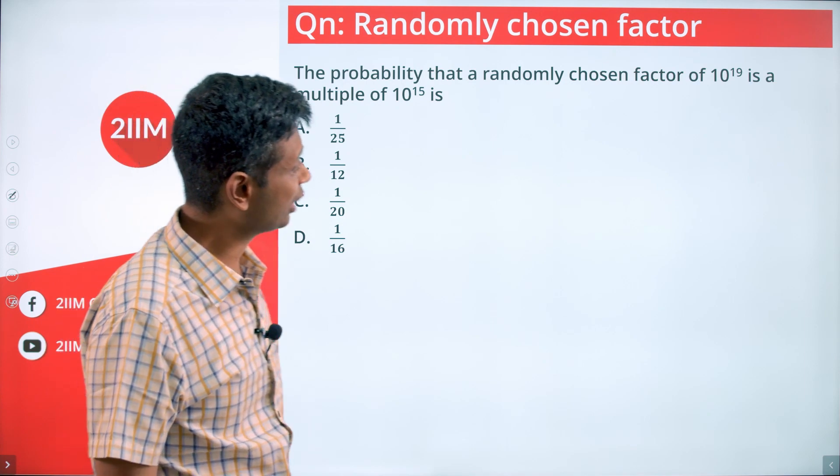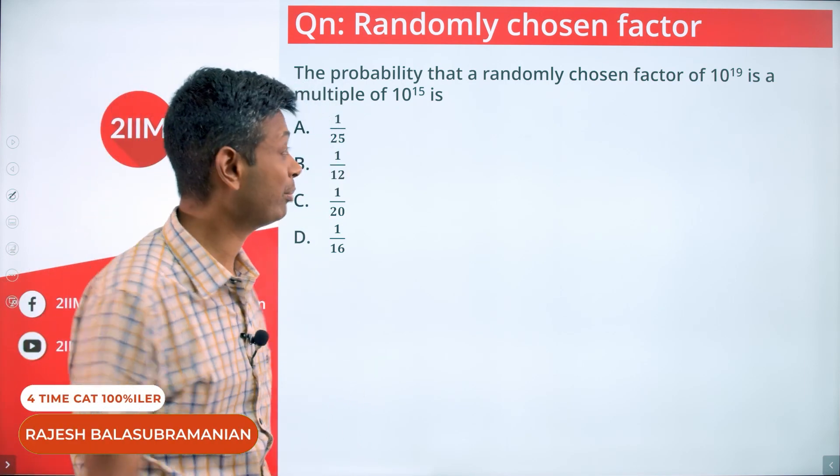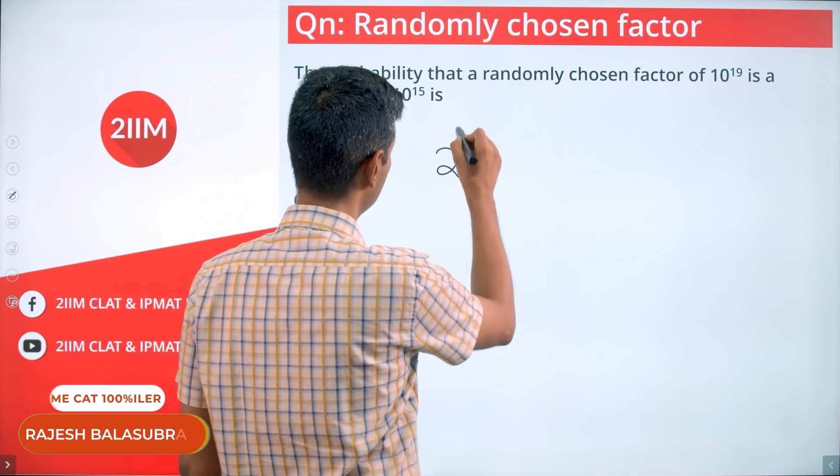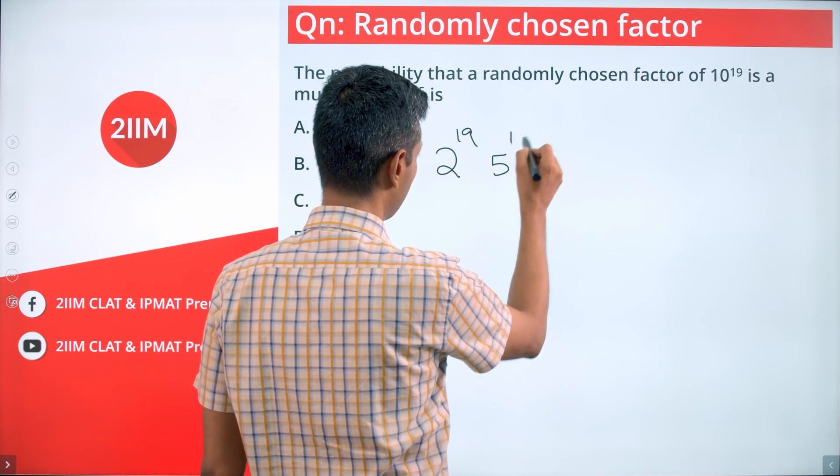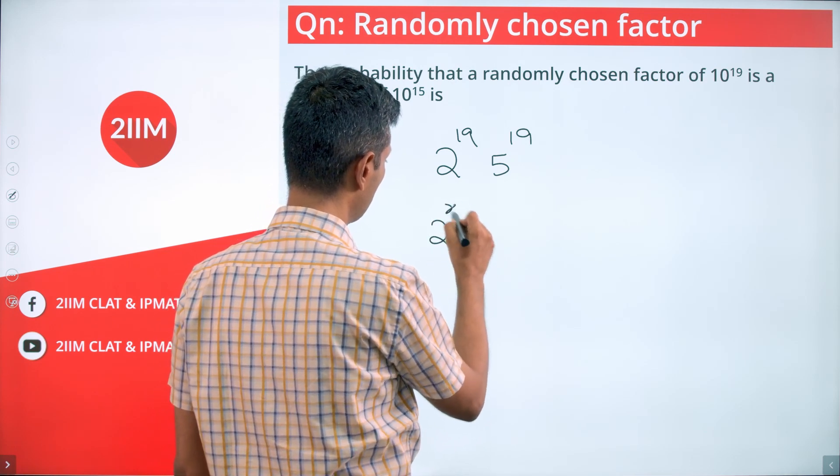The probability that a randomly chosen factor of 10^19 is a multiple of 10^15. 10^19 equals 2^19 times 5^19. Any factor of this number will be of the form 2^x times 5^y.